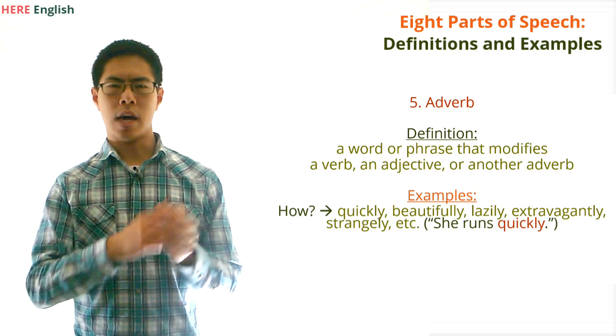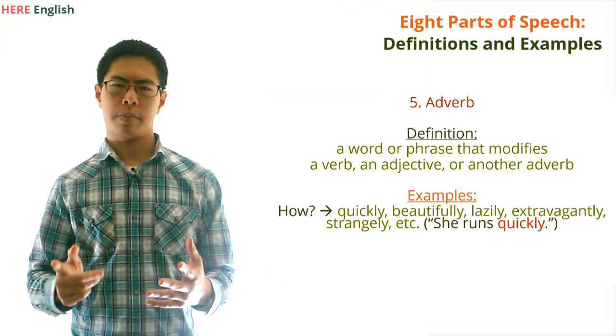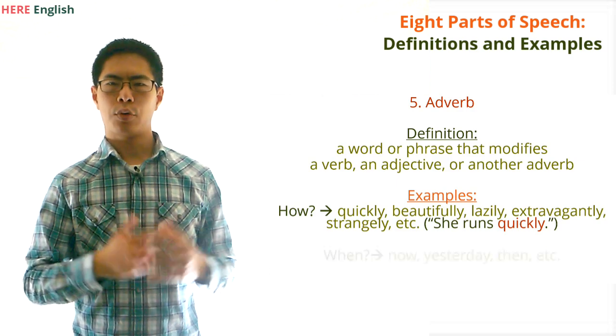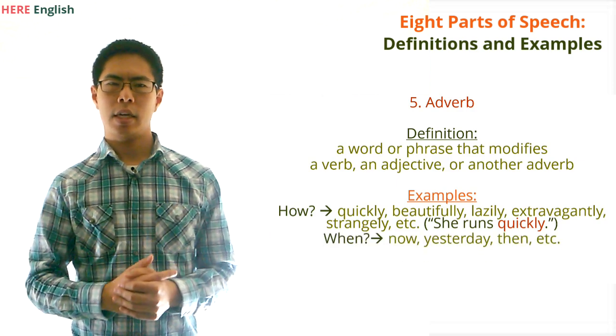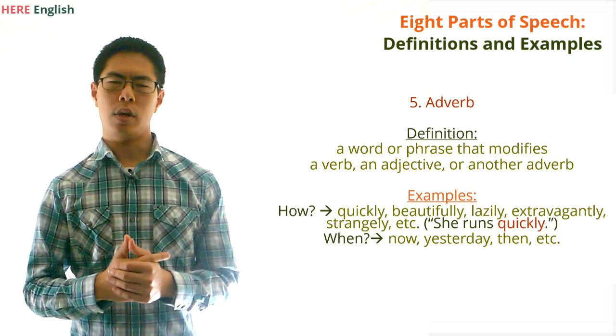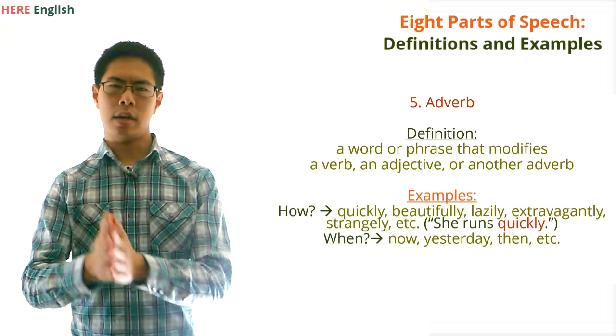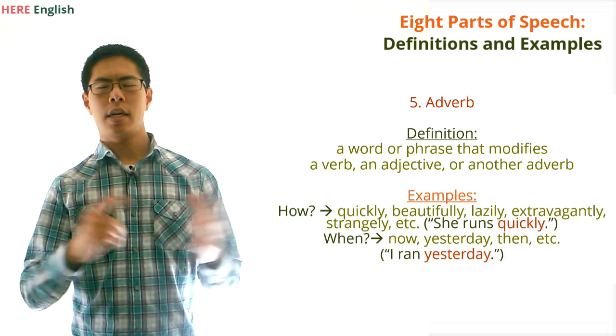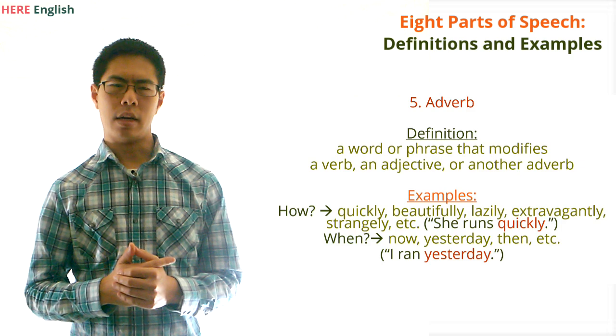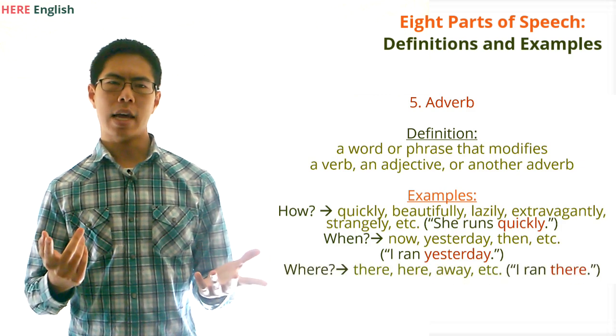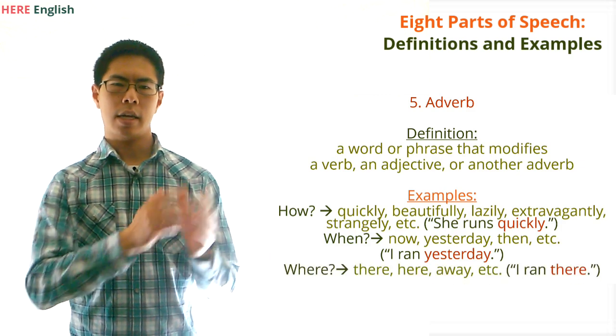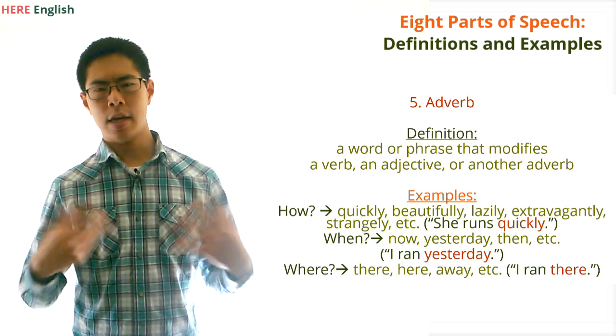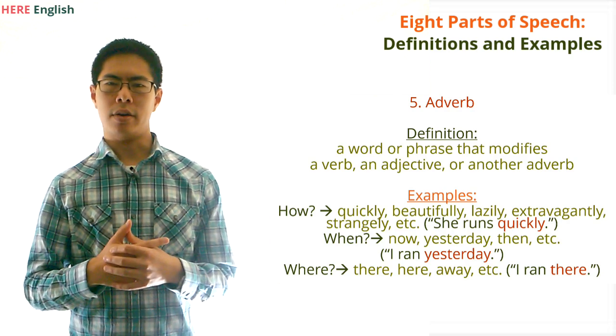Adverbs also answer the questions how, when, and where. For example, the ly adverbs that we just listed tell how something is done. Quickly tells us how she is running. Examples of adverbs that answer the question when are words like now, yesterday, and then. For example, in the sentence I ran yesterday, yesterday tells us when I ran. Examples of adverbs that answer the question where are words like there, here, and away. For example, in the sentence I ran there, there tells us where I ran.